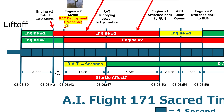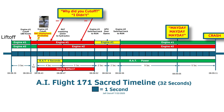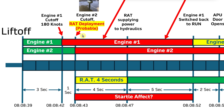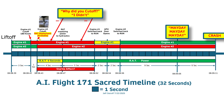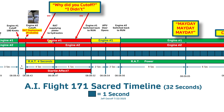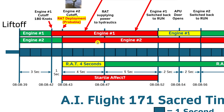08:08:43 is now the new timestamp we are saying the RAT deployed. Even if it wasn't deployed already — some people think it happened before liftoff — it certainly had to have deployed by this point, because once you have both engines cut off, the RAT is going to deploy no matter what. Previously we said it happened at 08:08:42; now I'm saying 08:08:43, with much higher confidence. The RAT kicks in here and takes four seconds to supply power to the hydraulics, so by 08:08:47 the RAT is supplying hydraulic power.